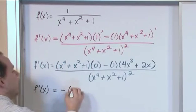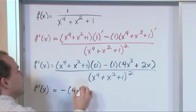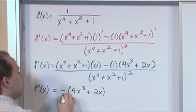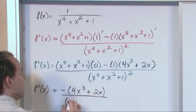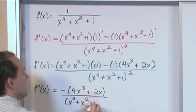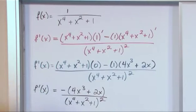So we'll have a negative and we'll have 4x cubed plus 2x on top. And on the bottom we'll have x to the fourth plus x squared plus 1 squared. And if you wanted to, you could expand this bottom thing out. But you would have a really long polynomial term on the bottom. It wouldn't really cancel anything.